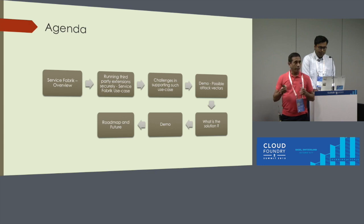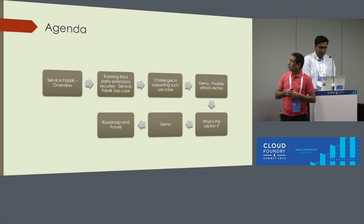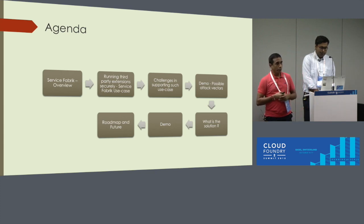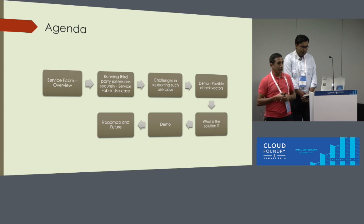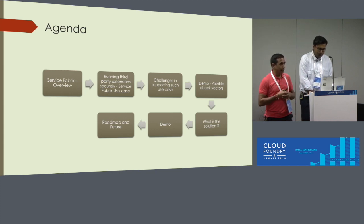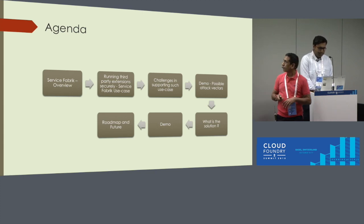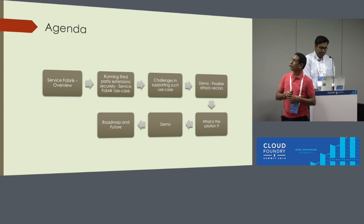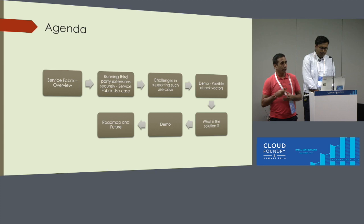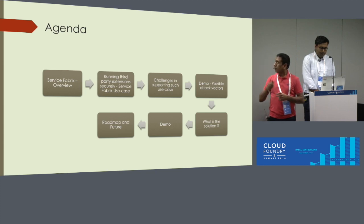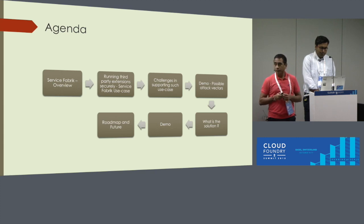We will show you a demo on what kind of possible attack vectors we see when we allow custom code to be executed on the BOSH-based virtual machine, and then what is the mitigation for that — how do we mitigate these attack vectors and what are the best practices. We'll also talk about the roadmap and future for these security extensions. We demonstrate the actual attack vectors we saw and then the mitigations for the same.